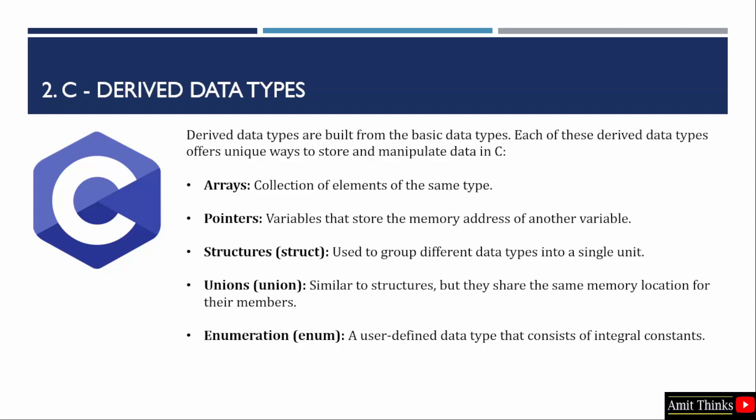Structures are used to group different data types into a single unit. So array is for similar type, whereas structures are for different data types. Unions can be related with structures, but they share the same memory location for their members. We will study all of them in the upcoming lessons. The last one is enumeration. It is a user defined data type that consists of integral constants. Enum is short for enumeration. It consists of a set of named integer constants. It is used to assign names to the integral constants which makes the code more readable and maintainable.